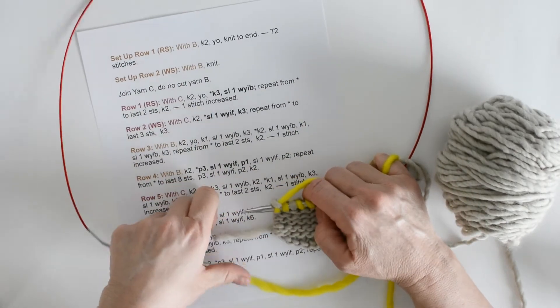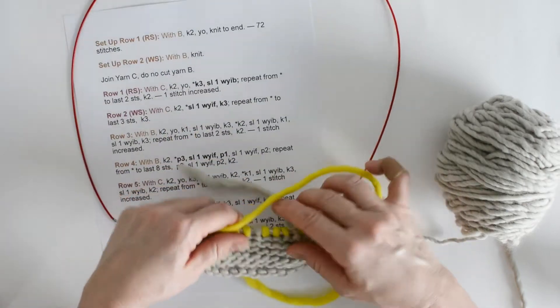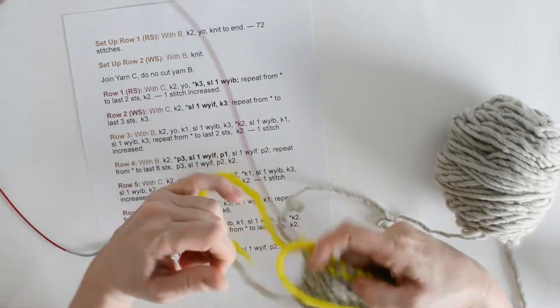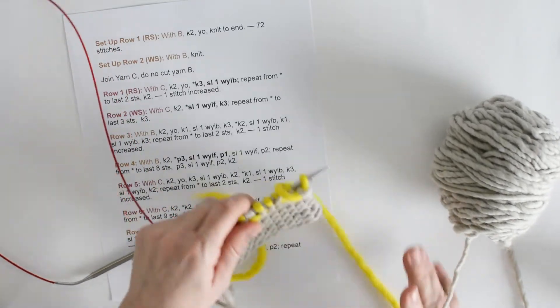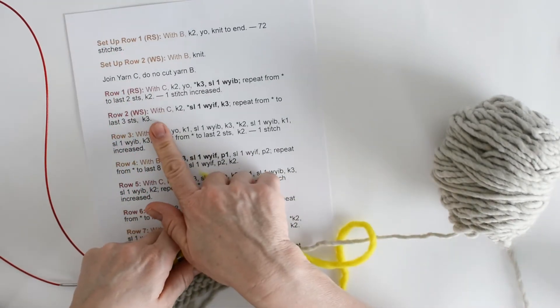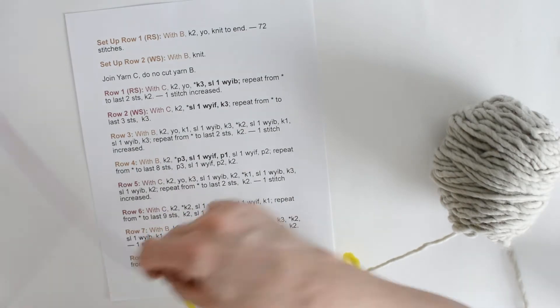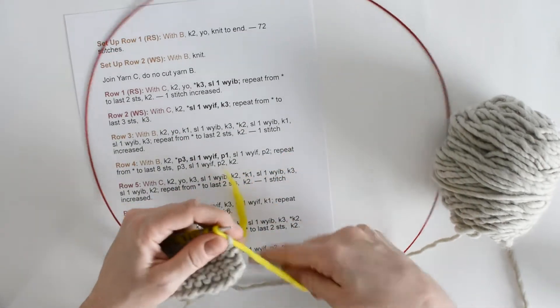So in this row we've increased 1 stitch. We did that yarn over at the beginning. Now it's time to work on a wrong side row. We're still working with the yellow with C. We're going to knit 2.